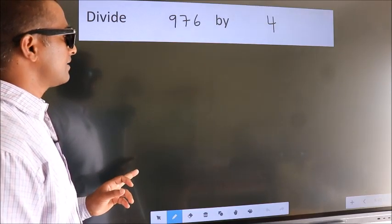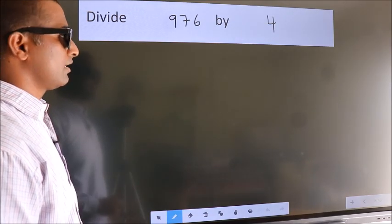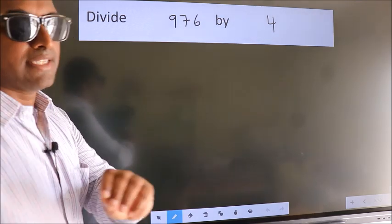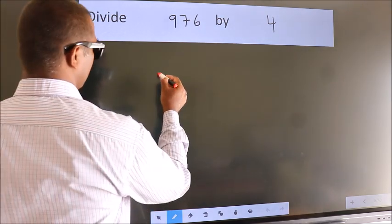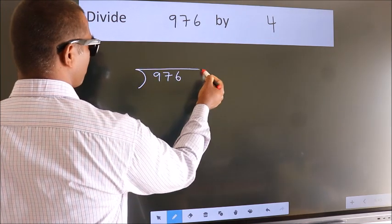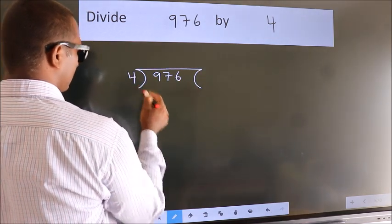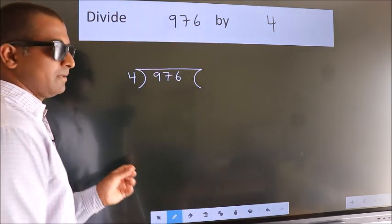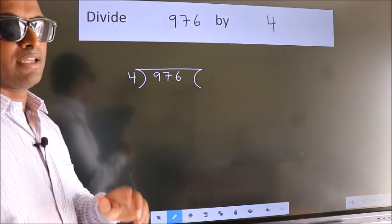Divide 976 by 4. To do this division, we should frame it in this way. 976 here, 4 here. This is your step 1.